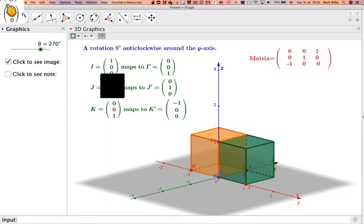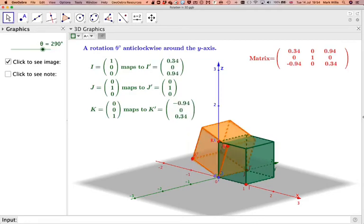Okay, you can get the matrix by seeing what the points map onto. So we can see at the moment i has mapped onto this point here. j has stayed put. And if you see all the way through, j stays put.